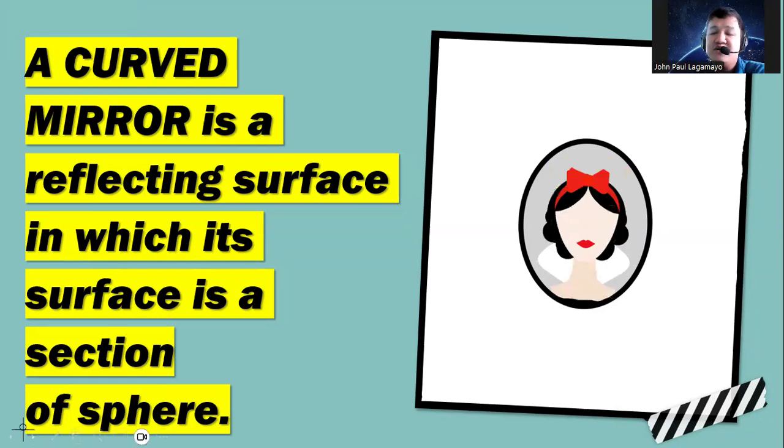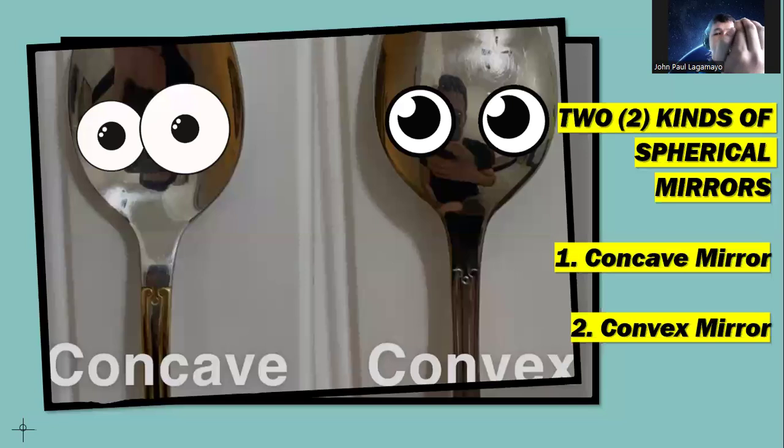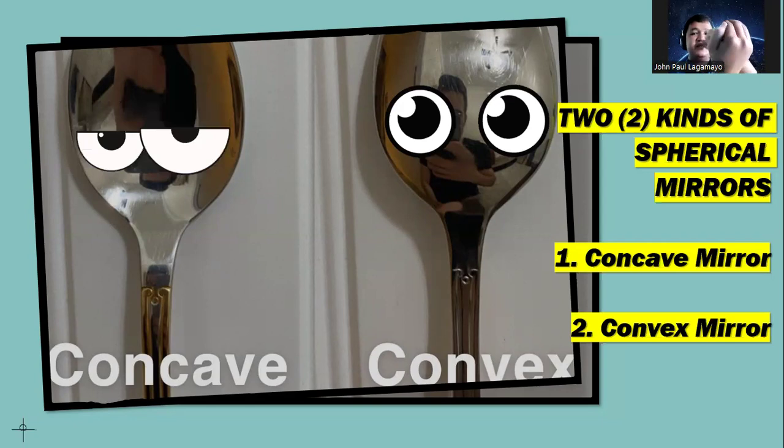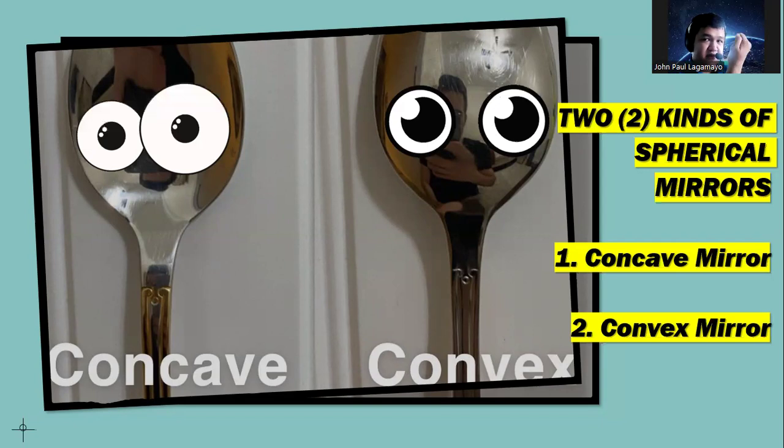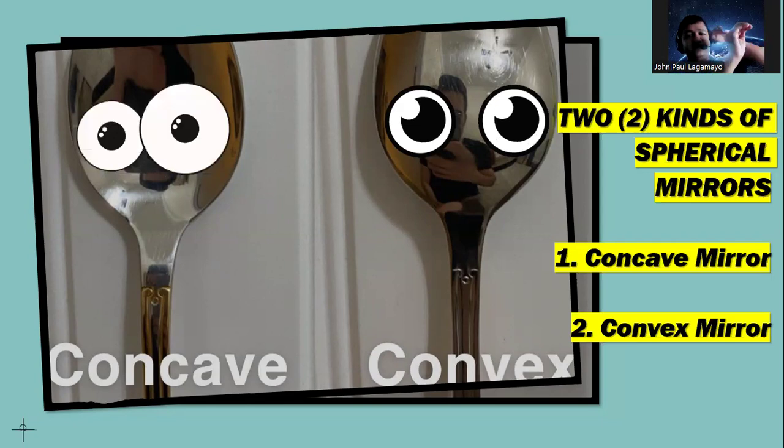There are two kinds of spherical mirrors: what we call as the concave and then the convex mirror. When we say concave mirror, we are speaking of the mirror facing your face—the incident rays are going toward the mirror. While the convex mirror, the rays of light are going away from the curved surface. So I'm hoping you are getting that now. The two kinds of spherical mirrors have different properties in terms of their reflection.